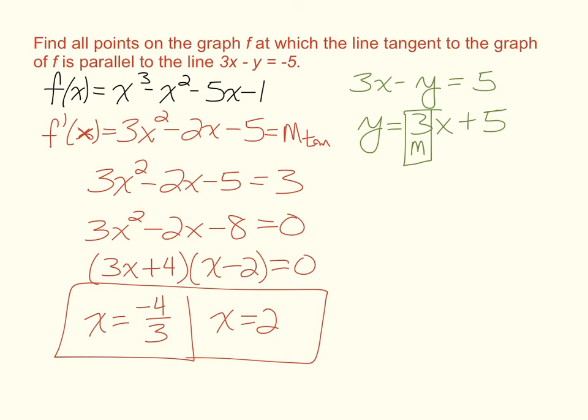Now going back and looking at what is being asked, it says find all points on the graph of f. Points refers to two coordinates. So we have an x coordinate, we have a second x coordinate, but we are missing two y coordinates for these points. In order to find the y coordinates, we need to take these values and go back to the original function and substitute them into the original function to find the y values.